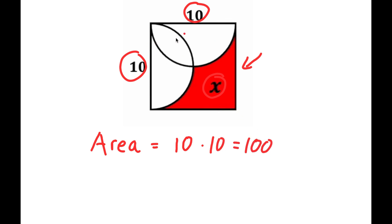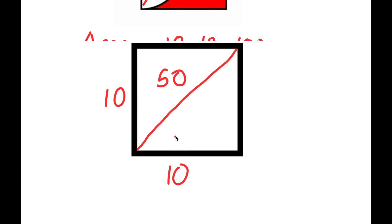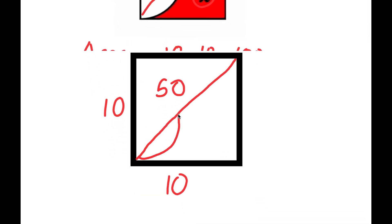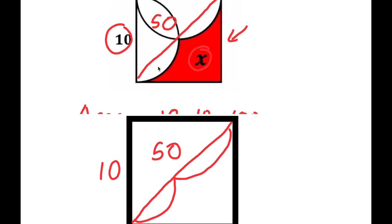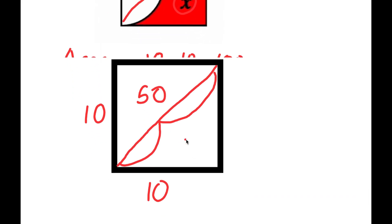Since the area of the whole thing is 100, the area of half of this — just this part over here — is going to be 50. So the area of this half is 50. Let me draw a new square, divide it in half, and label this part as 50. We also know that this side is 10 and this side is 10. Now I'm going to draw in these white regions over here, and this is going to be x.